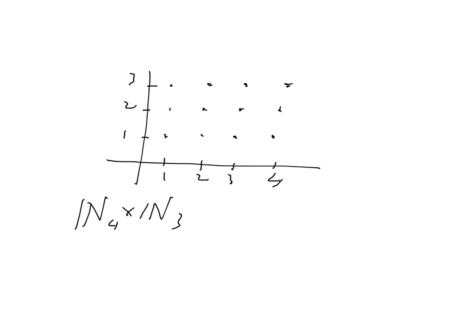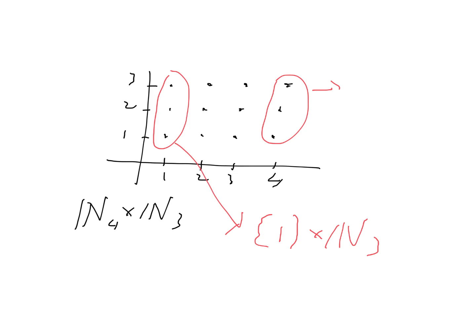So that's the idea of the proof — to write N₄ × N₃ as a union of these column sets. Now what are these sets? Well, this one over here is simply {1} × N₃, and this one here is {4} × N₃. So it's actually quite simple to write each of these down, and their union gives us N₄ × N₃. That's the idea of the proof in general.